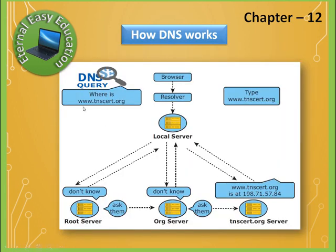For example, if you type a website like www.tnscert.org, the browser contacts the resolver, then the local server. If the local server knows the answer, it is returned; if not, it asks the .org server, moving through the hierarchy. This is the searching process done through the split servers.